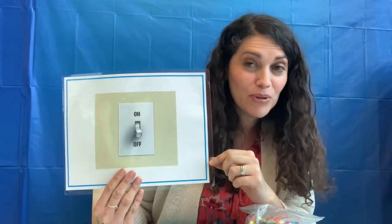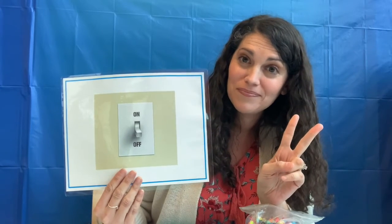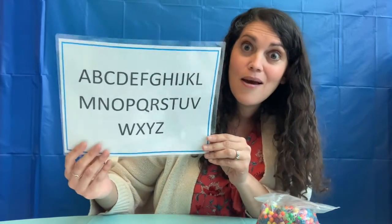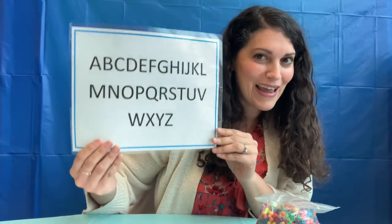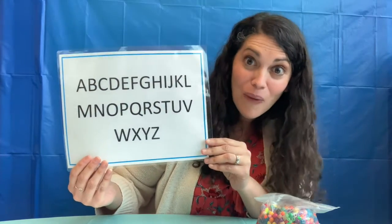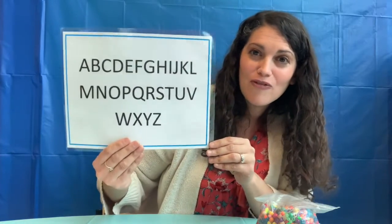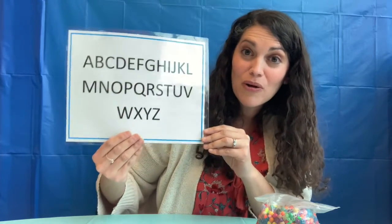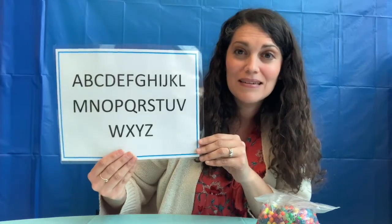That is why a computer can only understand those two numbers. Now we know that we can communicate with computers using binary code. But how do we communicate with each other? Humans communicate using language — our ABCs. But computers don't understand ABCs, so we have to translate our alphabet into binary code if we want to program a computer. And that is what we are going to do today — translate our alphabet into binary code.